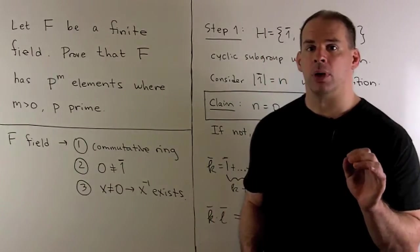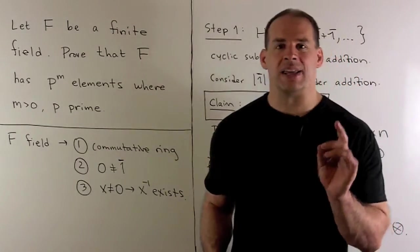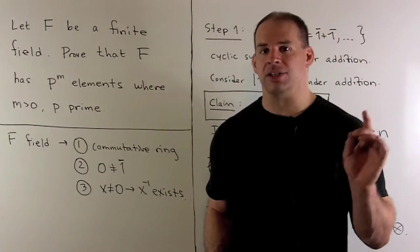Then, we're assuming that we have a multiplicative identity, we'll call it one bar, which is not equal to our additive identity, zero.